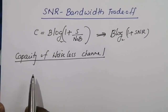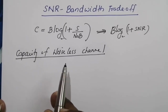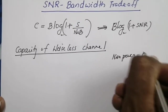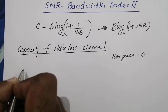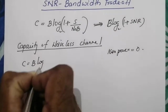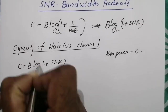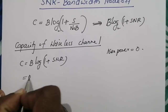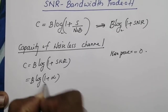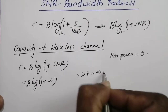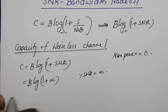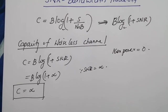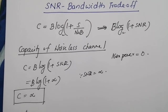Now we will find the capacity of a noiseless channel. We know that when the channel is noiseless, the noise power will be 0. So for a noiseless channel, C = B log(1 + SNR). Since noise power is 0, SNR will be infinity, so this becomes B log(1 + ∞), and as a result the capacity will be infinity. So the capacity of a noiseless channel is infinity.